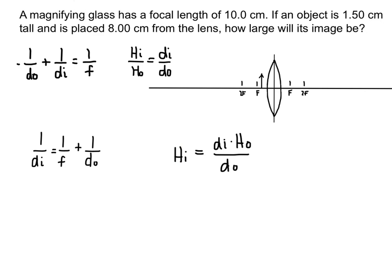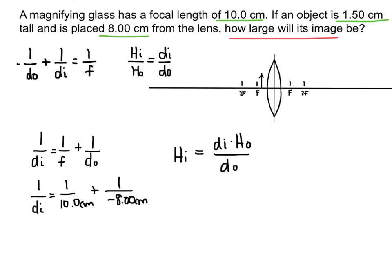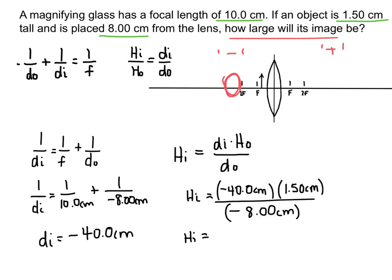This problem: a magnifying glass has a focal length of 10 centimeters, an object is 1.5 centimeters tall and placed 8 centimeters from the lens — how large will the image be? Plugging into the first equation, remembering to keep the object distance negative, I get an image distance of negative 40 centimeters. That means the image is on the negative side of the lens — a virtual image. Plugging into the second equation to find image height, we have two negative signs which will produce a positive answer.